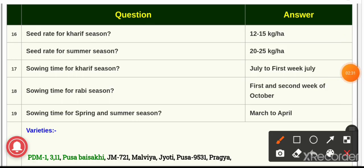Question number 16: the seed rate — for Kharif season it is 12 to 15 kg per hectare, and for summer season it is 20 to 25 kg per hectare.